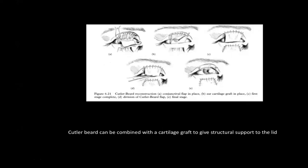An example of how the Cutler-Beard is combined with a cartilage graft: first the conjunctival flap is put in place, then ear cartilage is placed, and then the skin is sutured to the skin defect. The ear cartilage sits between two vascularized pieces of tissue. After eight weeks, the bridge of skin is divided, giving a new upper lid and a resutured lower lid. There remains some controversy with its description.